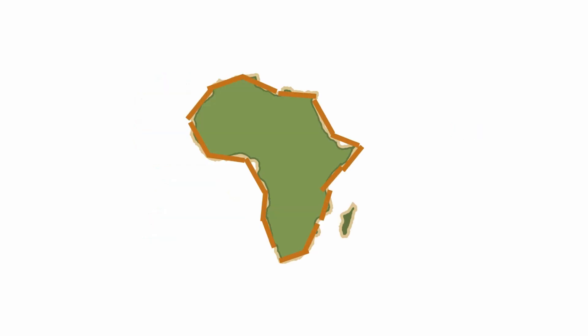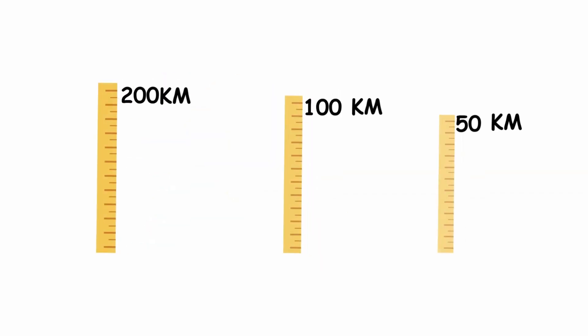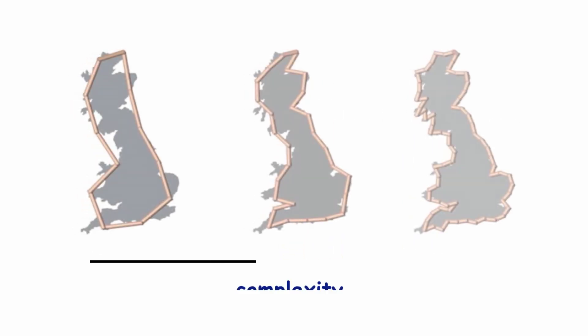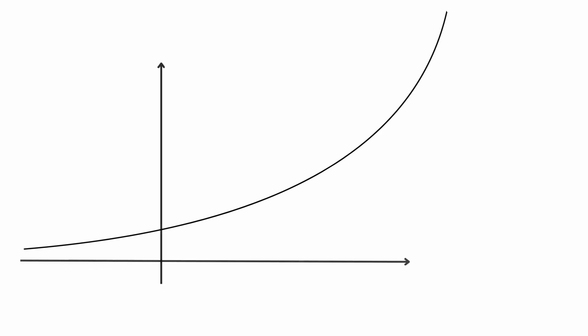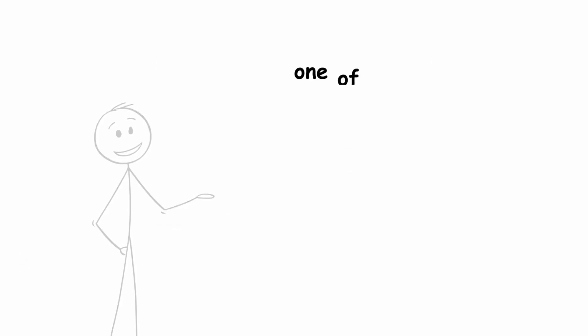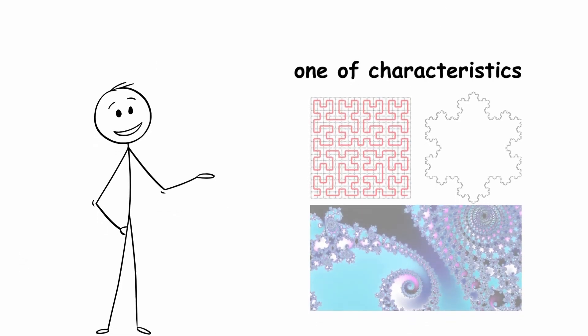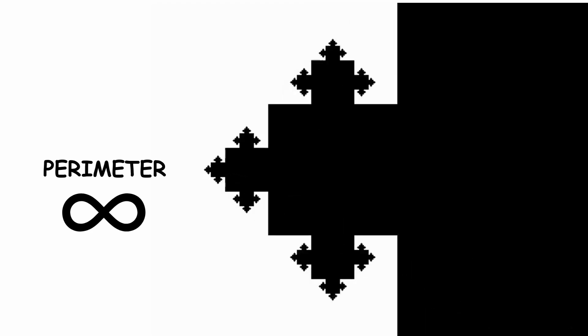The length of the coastline depends on the measurement method used. As the length of the ruler was shortened, more complexity was added to the coastline, and the length of the coastline increased exponentially to infinity. And this is one of the characteristics of fractals. Their perimeter is considered infinite.